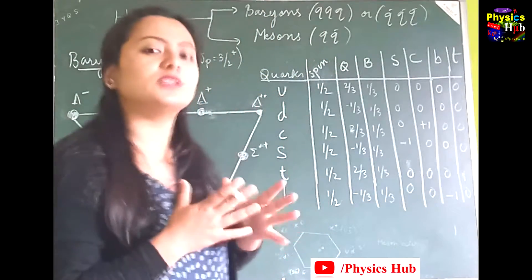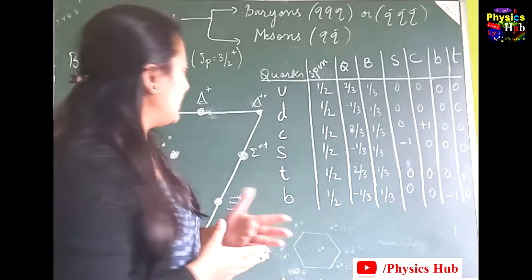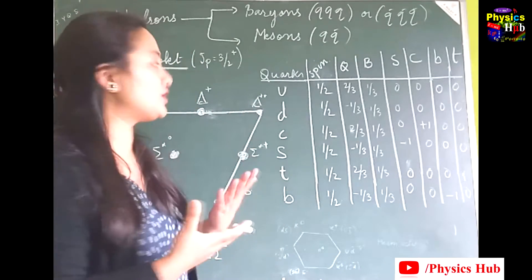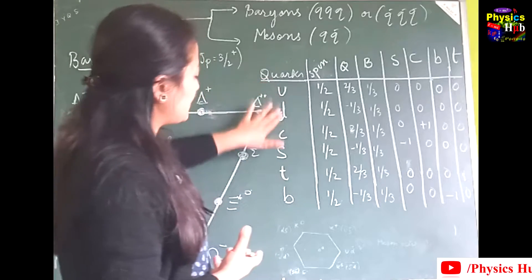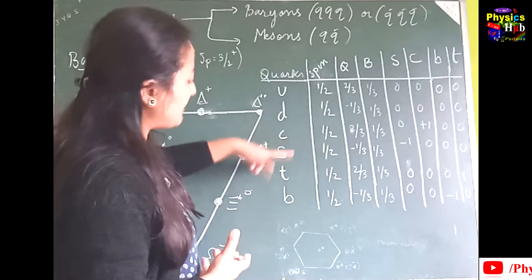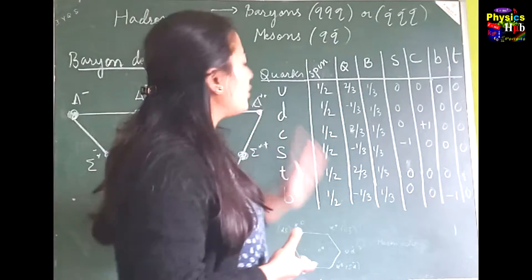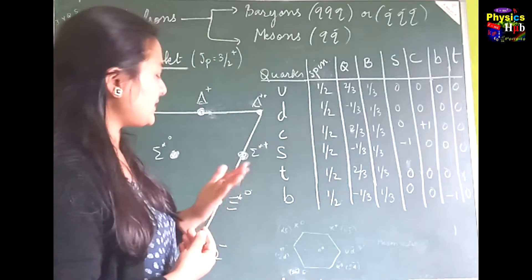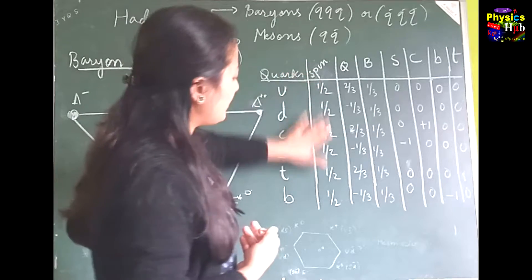There are six different types of quarks — also called six flavors: up, down, charm, strange, top, and bottom. All quarks are fermions and have spin one-half.